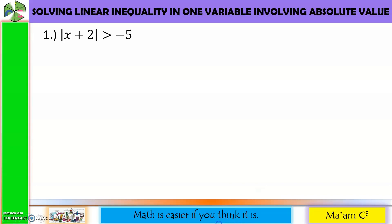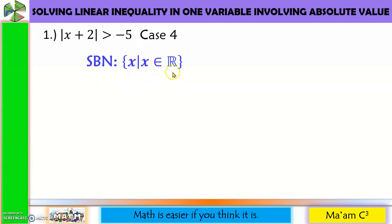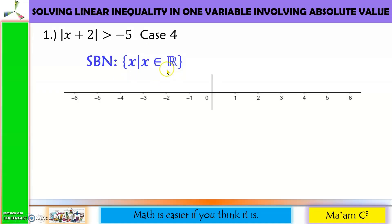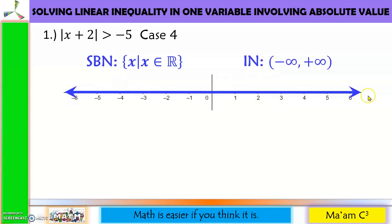Let us start solving. Here we have the absolute value greater than a negative number — this is Case 4. So our solution set is the set of all real numbers. In graph, that is from negative infinity to positive infinity. In interval notation, it is also negative infinity to positive infinity. Let's do a quick check by substituting 0: the absolute value of 0 plus 2 is 2, and 2 is greater than negative 5. Correct.